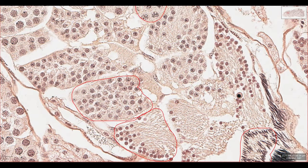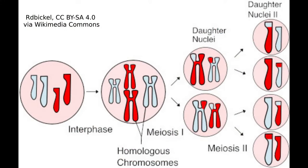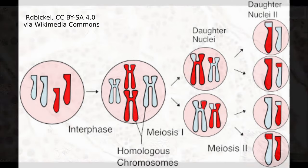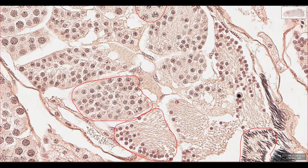Each spermatocyte will undergo two rounds of meiosis to ultimately produce four mature spermatids, although this can vary between species. This happens in the zone of maturation and reduction. The process of meiosis involves DNA replication followed by two rounds of division to create four cells with half the number of chromosomes, and each of these cells will be genetically different from one another.